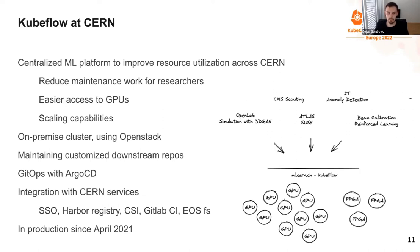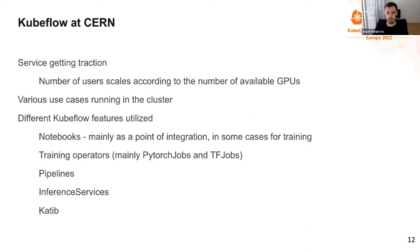We use CSI Manila for PVCs, GitLab CI for automated image builds, and the EOS file system — a network file system where researchers store their datasets. We've been in production since April 2021 and the service is gaining more traction. We get very good feedback from users because of the scaling capabilities that can't easily be replicated on local infrastructure. There are various use cases already running, both physics and non-physics.